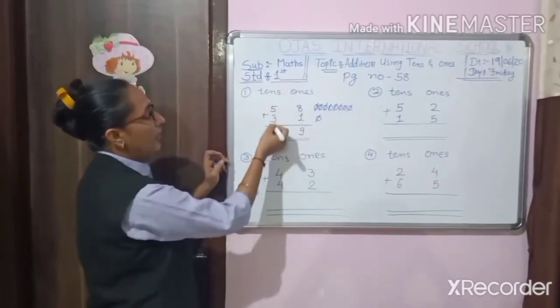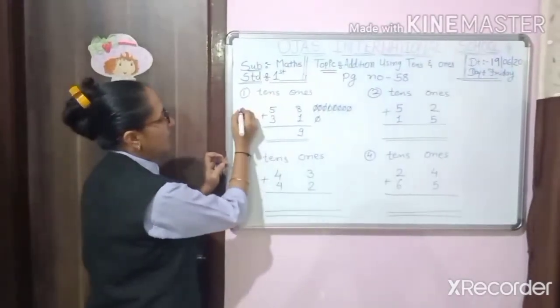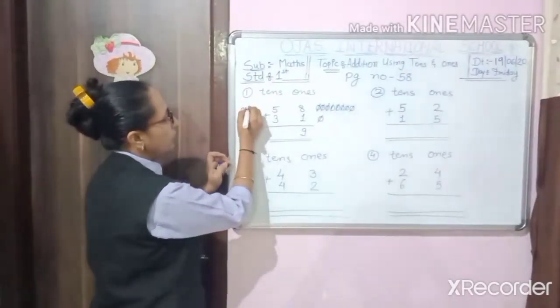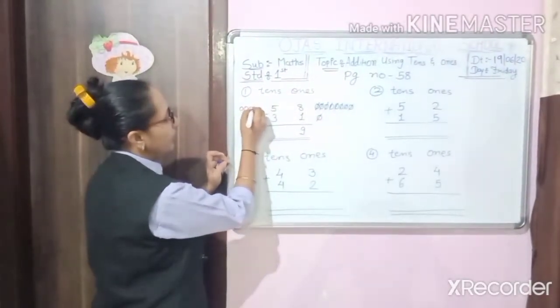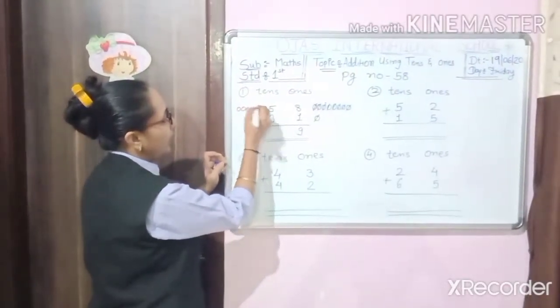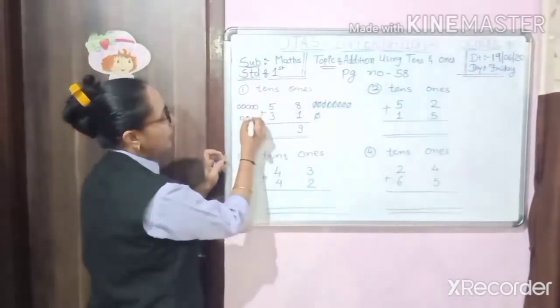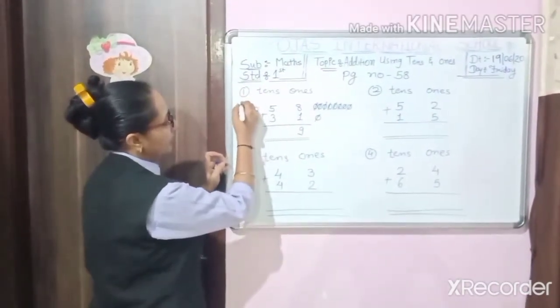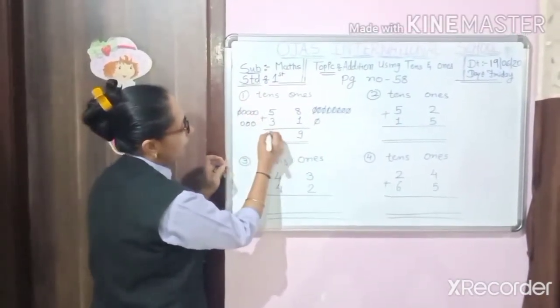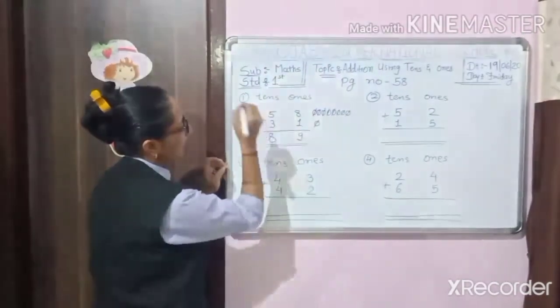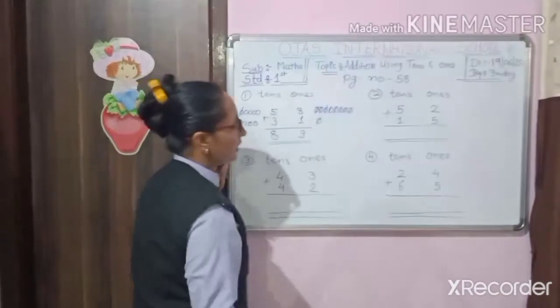Now we count the 10s place. So 1, 2, 3, 4, 5, 6, 7, 8. We have to write here 8. Understood?